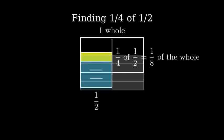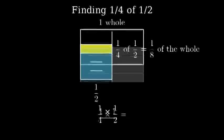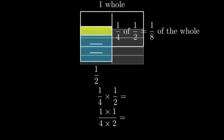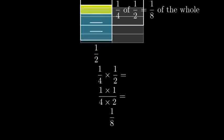This is why, when we multiply fractions one-fourth times one-half, we multiply the numerators, one times one equals one, and multiply the denominators, four times two equals eight, giving us one-eighth.